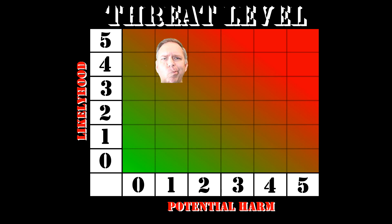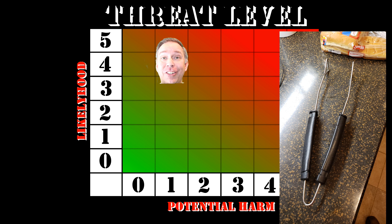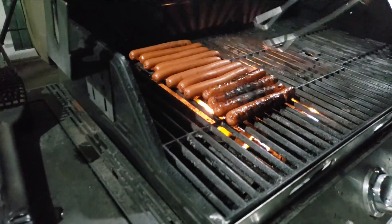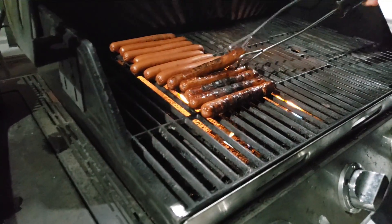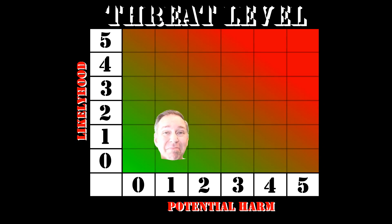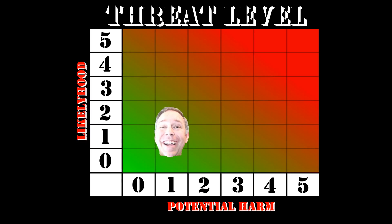We've got to get our hands away from the fire — maybe we can get some longer tongs. What would that do to the overall threat level? That would really decrease the likelihood of an injury, probably from a four down to a one. And that's a threat level of two. I can live with that.